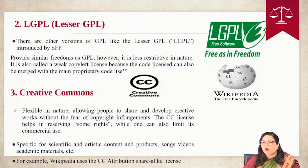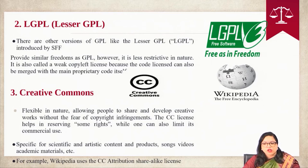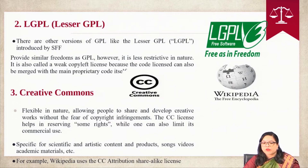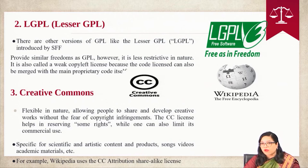Third, we have the Creative Commons license, which is much more flexible in nature, allowing people to share and develop creative work without the fear of copyright infringement. The Creative Commons license helps in reserving some rights while one can also limit its commercial use. This license is specific for scientific and artistic contents, songs and videos, and academic materials. For example, Wikipedia uses the Creative Commons Attribution Share-Alike, where you can use the content, but if you come up with a modification then you also have to share alike.